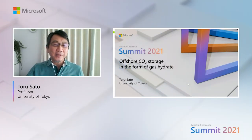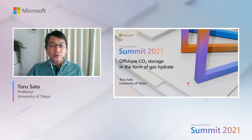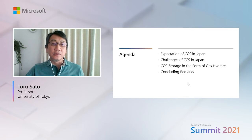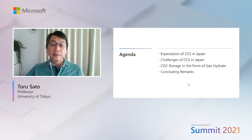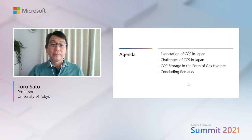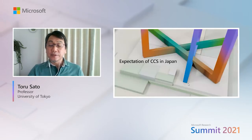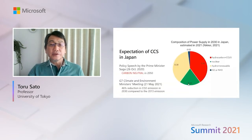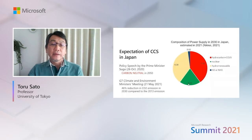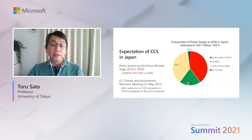Hello, I'm Toru Sato from University of Tokyo. Today I will talk about offshore CO2 storage in the form of gas hydrate. My agenda covers: expectation of CCS in Japan, challenges of CCS in Japan, CO2 storage in the form of gas hydrate, and concluding remarks. Last year, Prime Minister Suga declared carbon neutral by 2050, and this year he also declared a 46% reduction in CO2 emissions by 2030 at the G7 climate and environment ministers meeting.